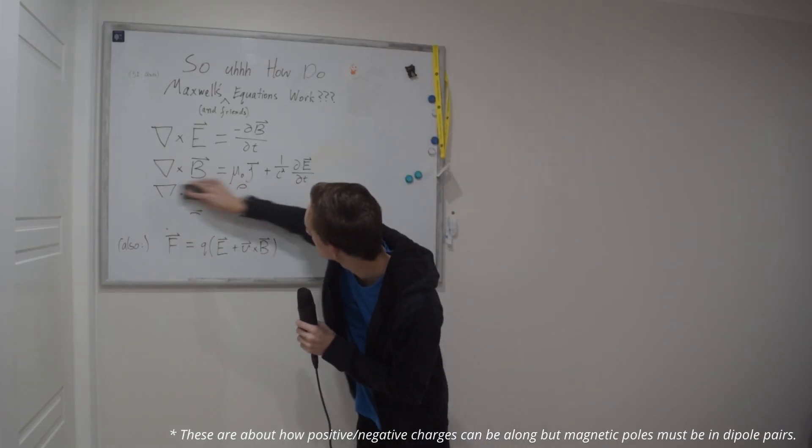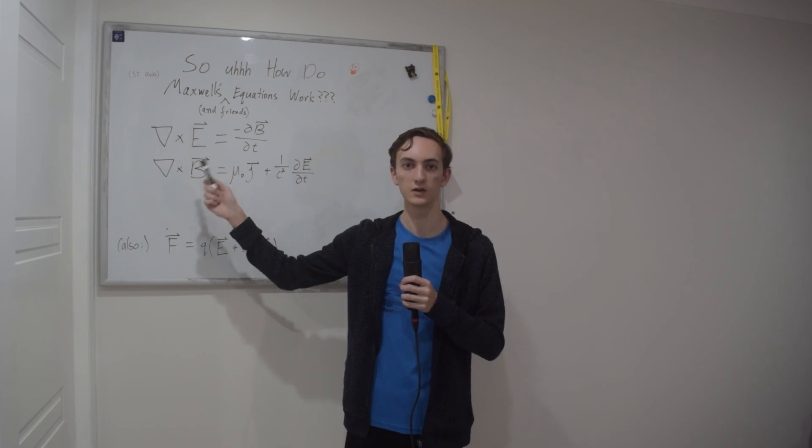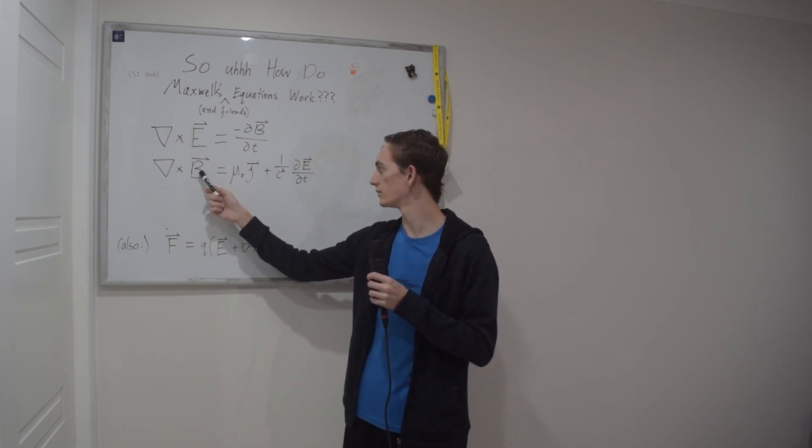Okay step one, ignore all this. Step two, we've got E for Emily the electric field and B for Barry the magnetic field.